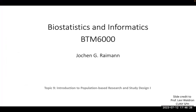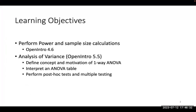Today we're going to continue into population-based research and study design, focusing on power and sample size calculations. This corresponds with an Open Intro chapter. Analysis of variance is the second topic of today, and it's the continuation of hypothesis testing involving three or more groups. We will define the concept and motivation of a one-way ANOVA — we're only dealing with one-way ANOVA. The two-way ANOVA and testing for interactions gets too complex.